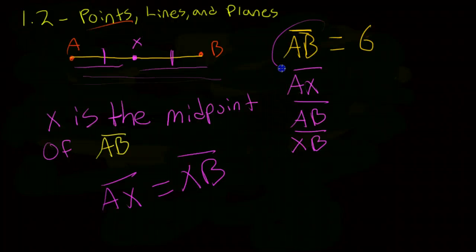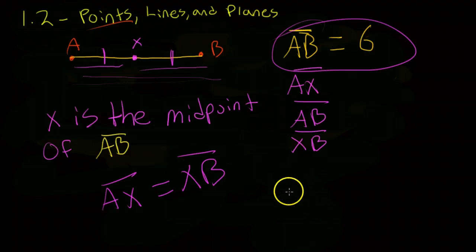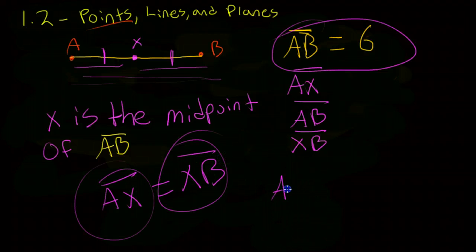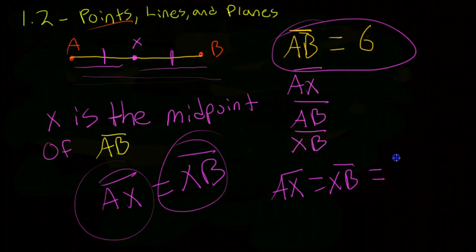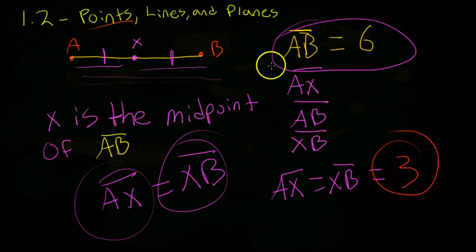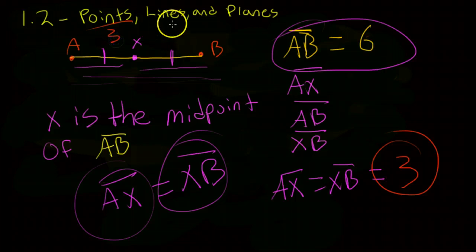So then, if we know up here that AB is six, we can easily find AX and XB. We would know, since AX equals XB, we would know that they both equal three. You guessed it, right? Because they're halves. Then we have three and three.